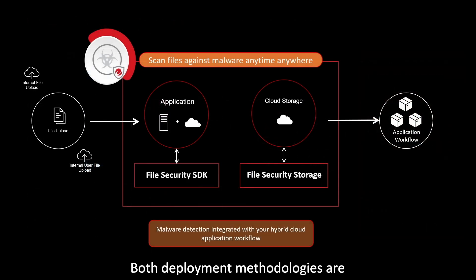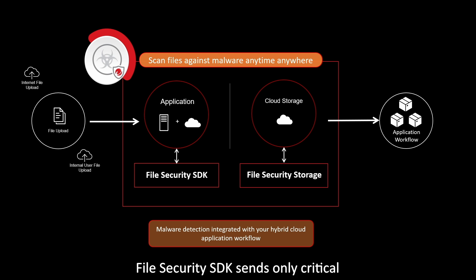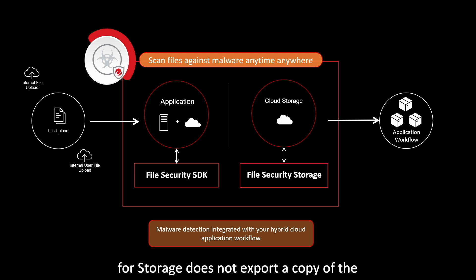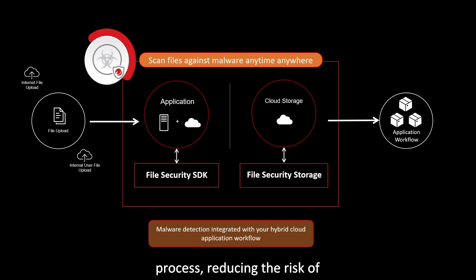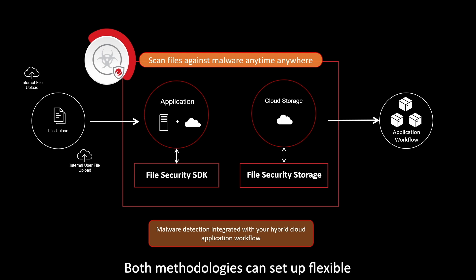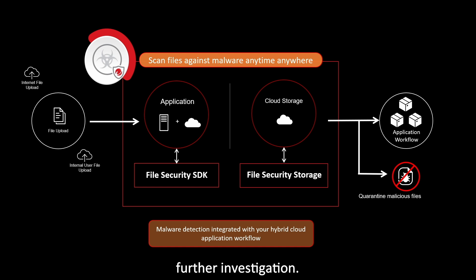Both deployment methodologies are designed to uphold data privacy wherever possible. The File Security SDK sends only critical parts of the file for scanning over an encrypted connection, and File Security for Storage does not export a copy of the object itself from the environment as part of scanning. This approach helps ensure data integrity and confidentiality by minimizing the exposure of files during the scanning process, reducing the risk of unauthorized access or data breaches. Both methodologies can set up flexible remediation actions, such as quarantining malicious files for further investigation.